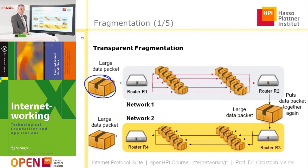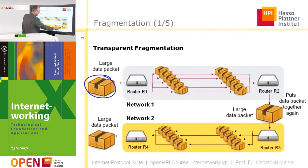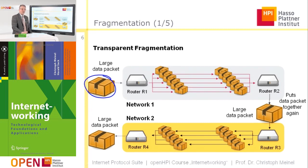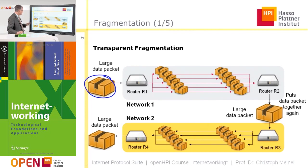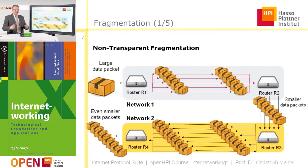These fragments are sent through network one and reach router two. Router two reassembles the fragments and hands the packet over to router three. Router three then considers the situation of network two. The packet is again too large, but network two has a higher MTU than network one, so fragmentation is done into a smaller number of fragments. Router four then reassembles these fragments back into a larger data packet.